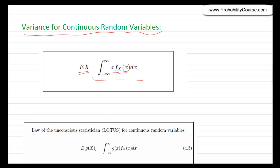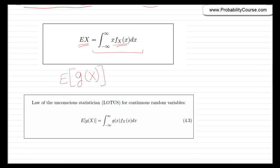We also talked about the expected value of a function of a random variable. So if I have g of x, a function of x, then we talked about how we can obtain this expected value. In particular, the expected value of g of x is given by this integral.